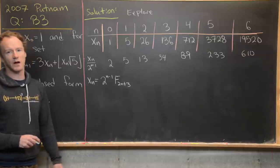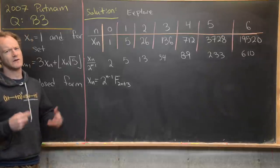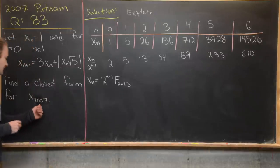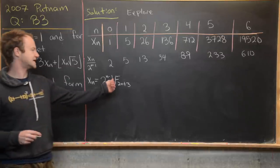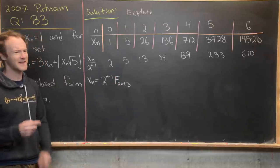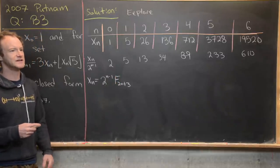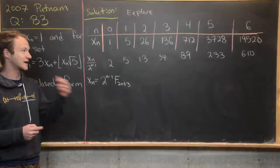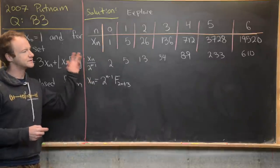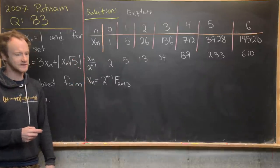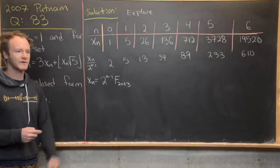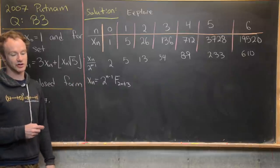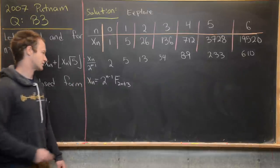Now, if you ask whether this counts as a closed form — plugging 2007 in and getting F sub something — probably not, because you'd need Binet's formula for Fibonacci numbers. But the strategy we're going to take actually won't require that. We'll mostly use the second hint: a one-step recursion with a floor function should be some deeper recursion, so we'll look for a two-step recursion.